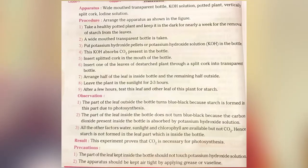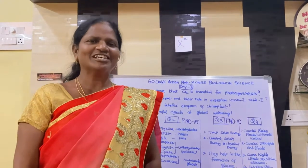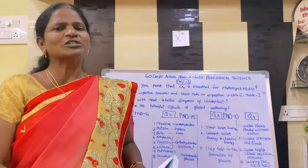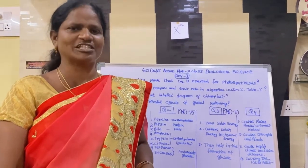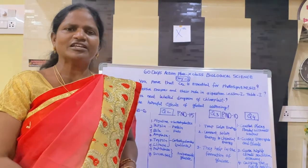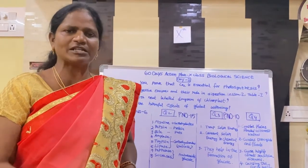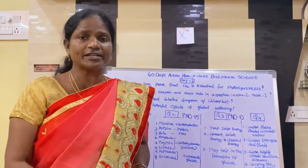Precautions: the part of the leaf kept inside the bottle should not touch the potassium hydroxide solution. The apparatus should be kept airtight by applying grease or Vaseline. Now I am going to explain the answer. The aim is to prove CO2 is essential for photosynthesis by Mott's half-leaf experiment. All listed apparatus must be written — if any one is missing, the experiment cannot be conducted and no result can be obtained.